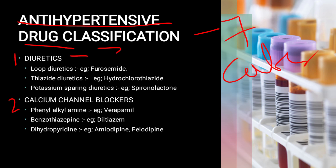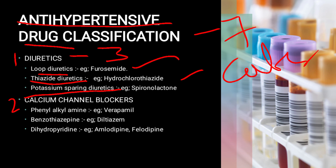Diuretics are classified into three categories: first, loop diuretics — example furosemide; second, thiazide diuretics — example hydrochlorothiazide and chlorthalidone; third, potassium-sparing diuretics — example spironolactone.